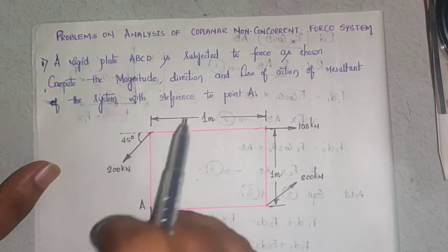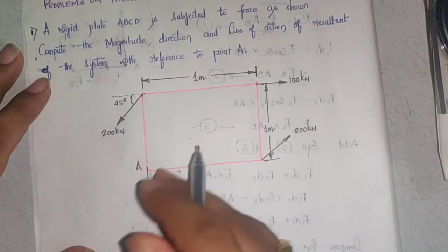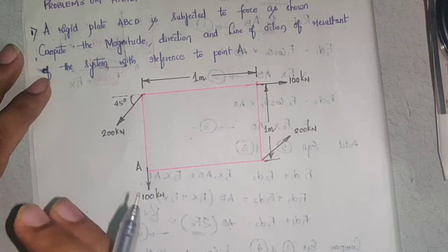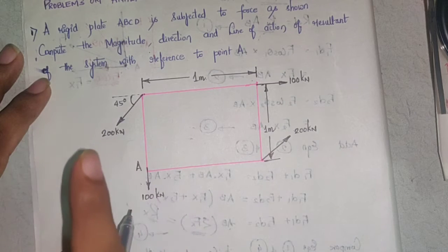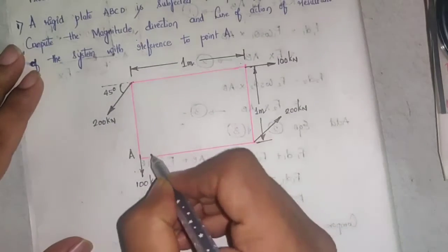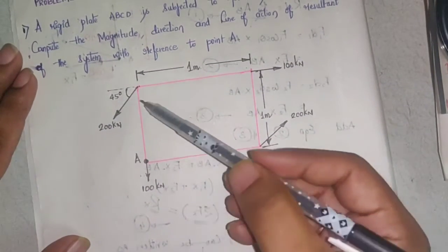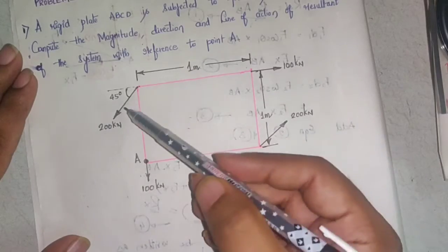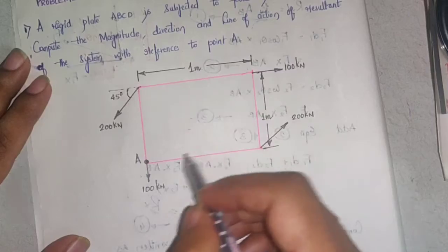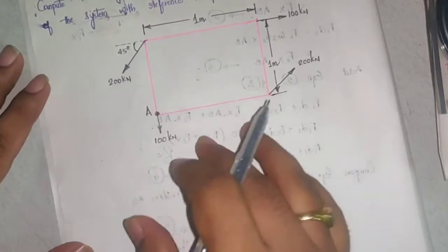You have to find the resultant magnitude, direction of the resultant, and position of the resultant with respect to point A. You can see the force system where the object is subjected to a number of forces. The size of the lamina is 1 meter by 1 meter.